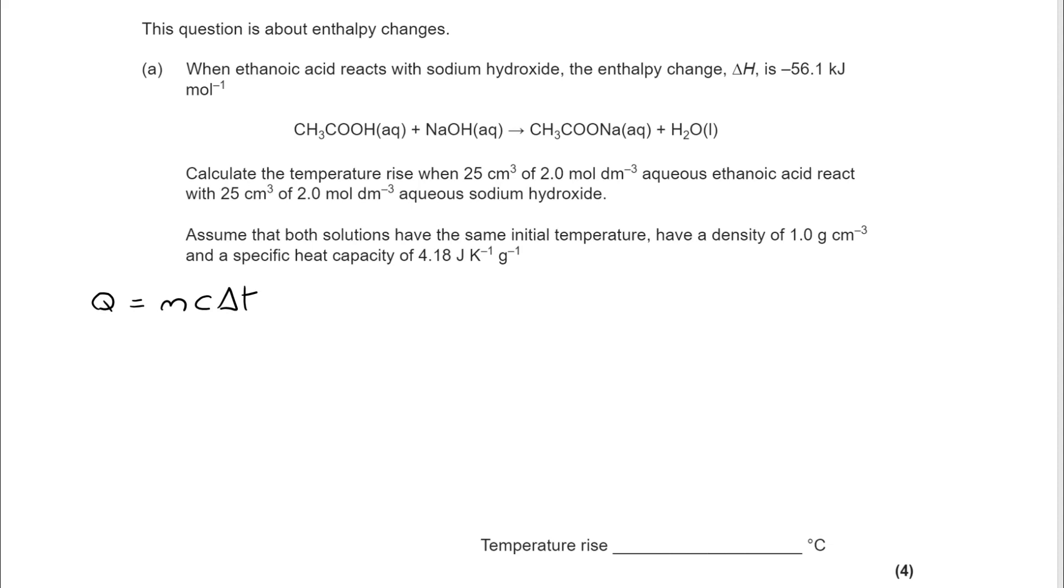If we try and do this systematically, it means that you can work out where the gaps are that you need to fit in. So we're calculating the temperature rise, so I've put that down as X. We know that C is 4.18. That will always be provided. And the M is 50.